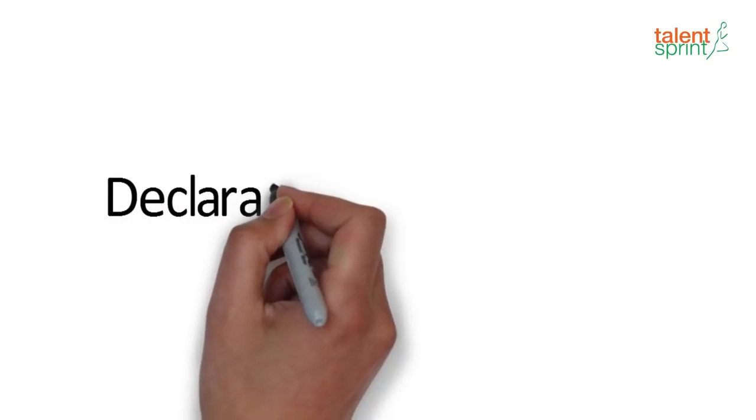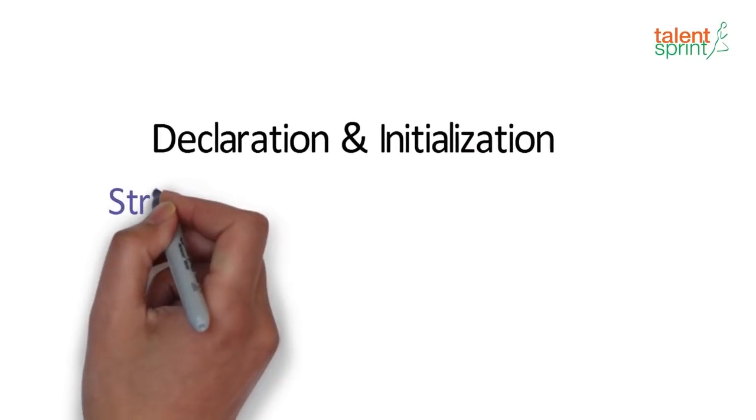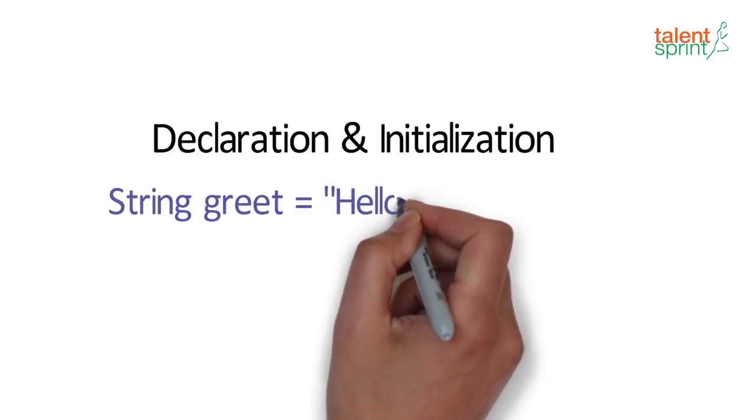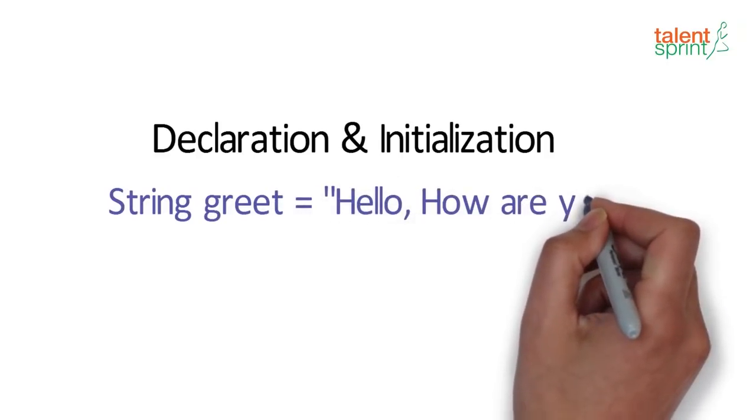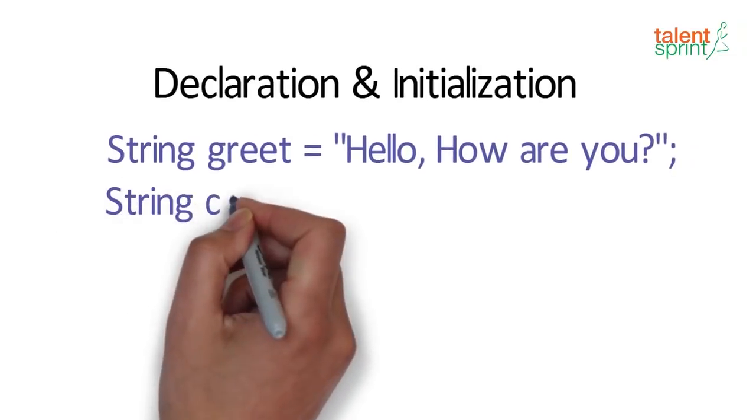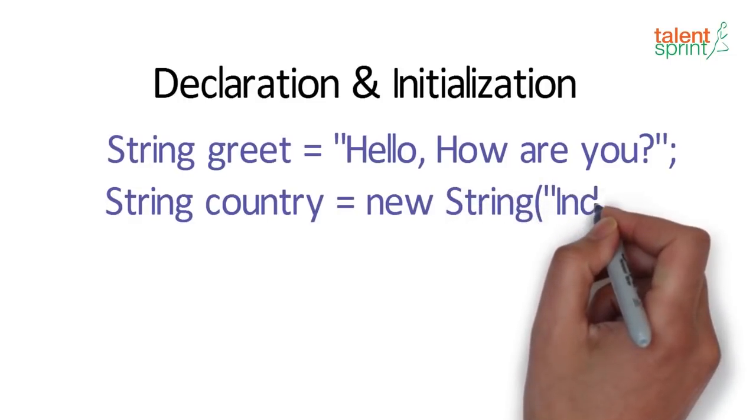Now let's move on to declaration and initialization. The first way is pretty simple as you see on the screen. Give the data type followed by the variable name and just initialize the variable with the string value in double quotes. Another way we can do the same is using new keyword as strings are objects.